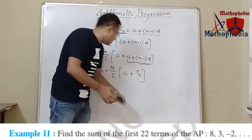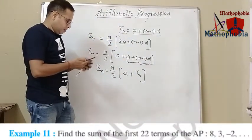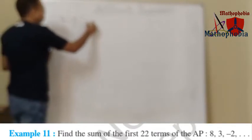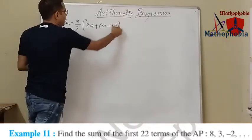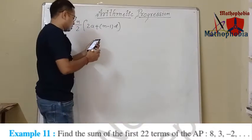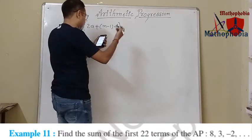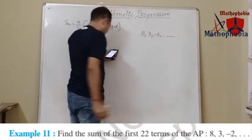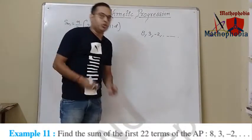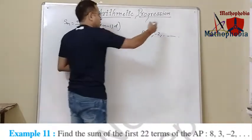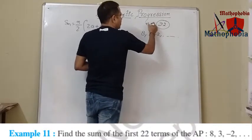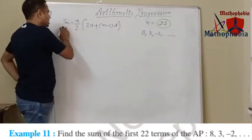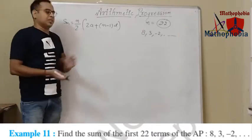Let's start with example number 11. The formula is Sn equals n upon 2 times 2a plus n minus 1 into d, and we need to find out the sum of n terms of the arithmetic sequence 8, 3, minus 2, up to 22 terms. So the value of n is 22. Let's apply the formula: Sn equals n upon 2 times 2a plus n minus 1 into d.